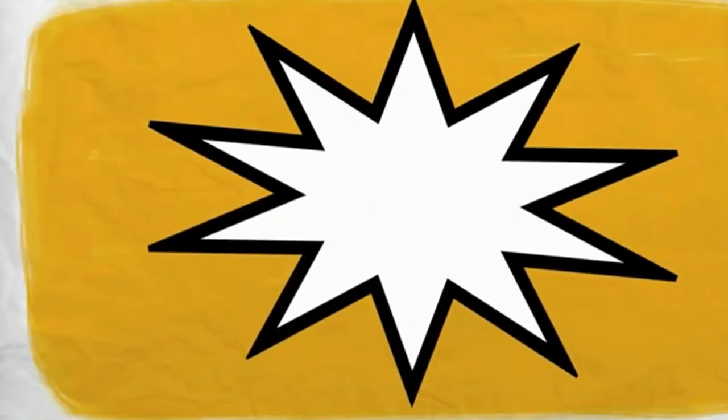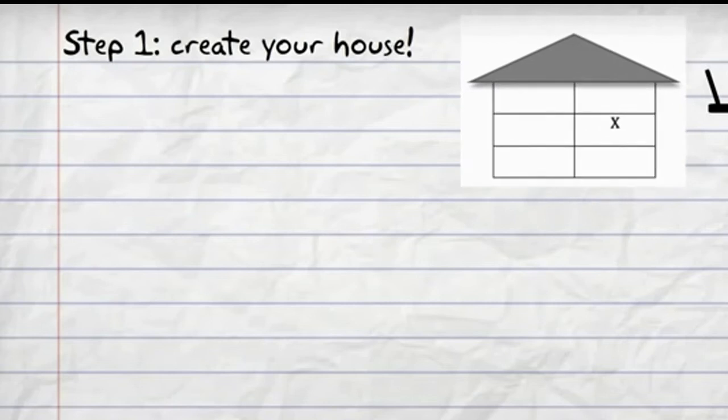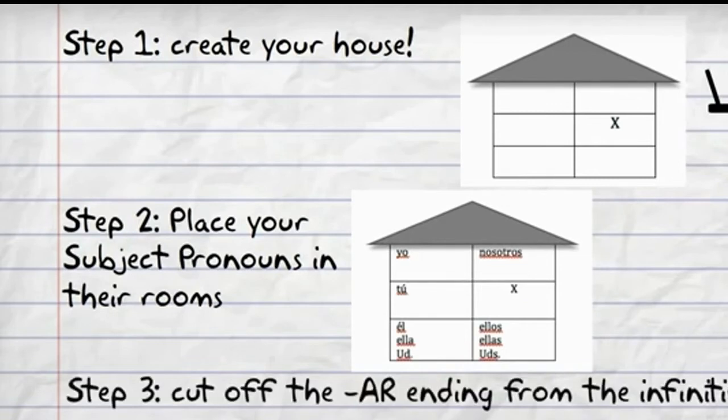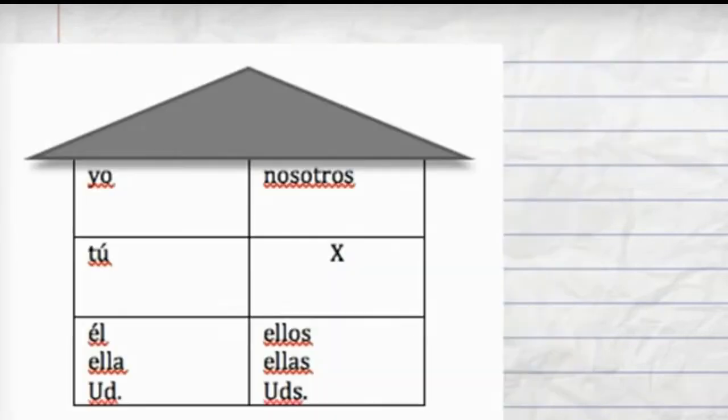For today, we're going to focus on how to conjugate AR verbs. Step one: create your house. Step two: place your subject pronouns in their rooms. Step three: cut off the AR ending from the infinitive.